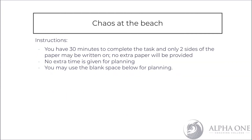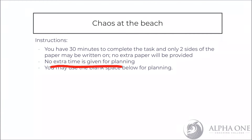Let's also look at the instructions. You have 30 minutes to complete the task, and only two sides of the paper may be written on. No matter how many ideas you have for this newspaper report, you only have two full pages to write on — which is why planning time is extremely important. They don't give you extra time for planning, so you need to incorporate it within the 30 minutes.